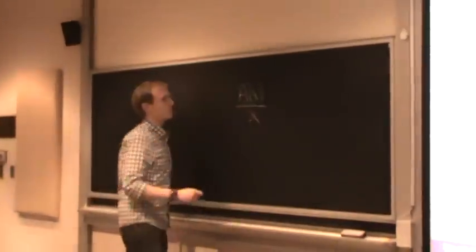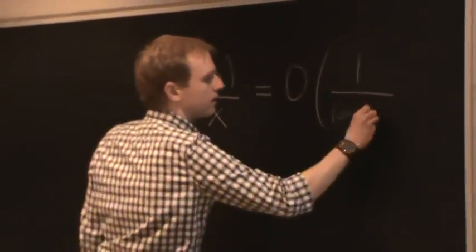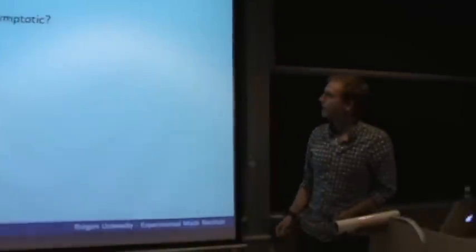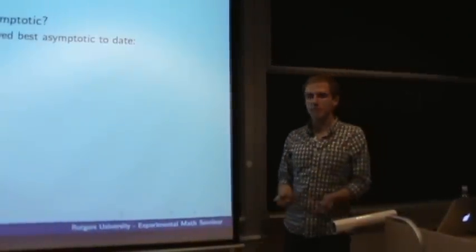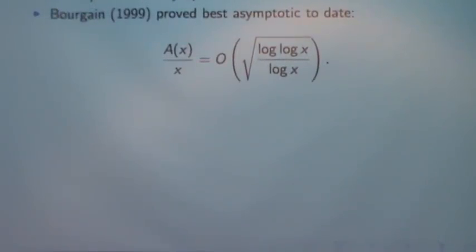So the asymptotic we gave before, which I will actually write up because it's pretty important, we have this function A(x) which was defined before to be the largest subset of 1 up to x that avoids three-term arithmetic progressions. And Roth proved that this was of order 1 over log log x. So one of the obvious questions to ask is, can this be improved? And Bougain in 1999 proved what I believe is the best asymptotic to date, which is A(x) over x is of order square root of log log x over log x. And it's quite a nice proof. I went through the paper and I provided a summary in my master's thesis, but I definitely didn't go into anywhere near as much detail as Roth.